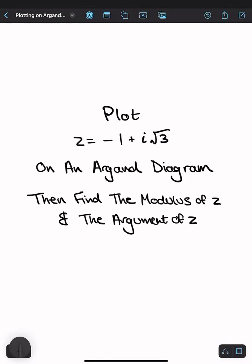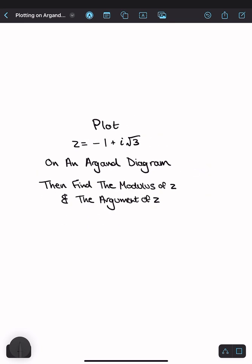Let's plot the complex number z equals minus 1 plus i root 3 on an Argand diagram and then find its modulus and its argument.